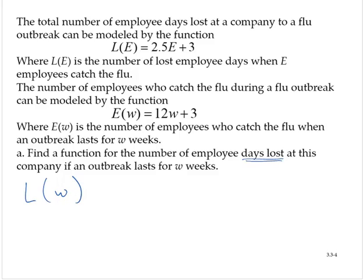Notice that in the second function, E(W) = 12W + 3, the input is weeks that the outbreak lasts, and the output is the number of employees who catch the flu.